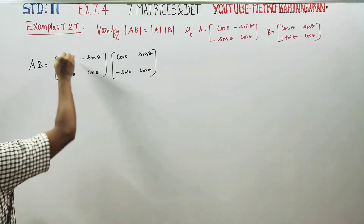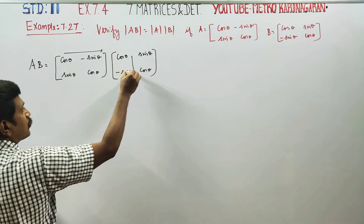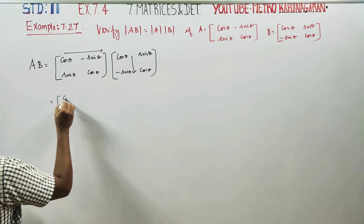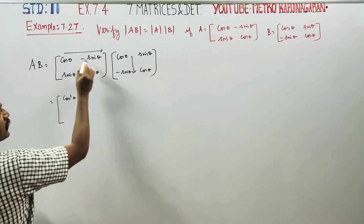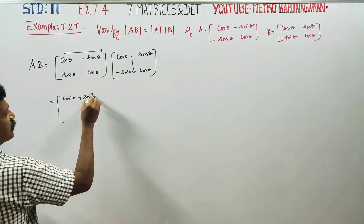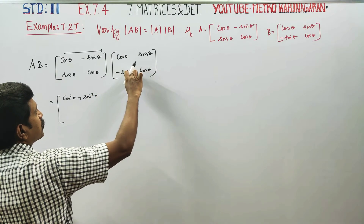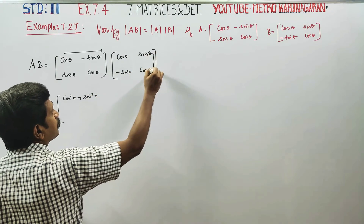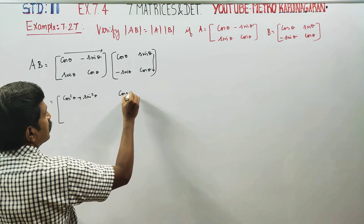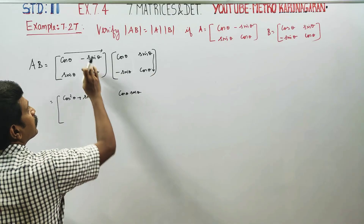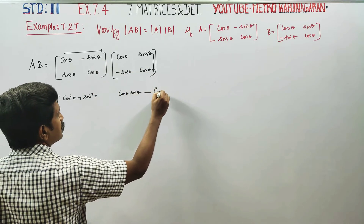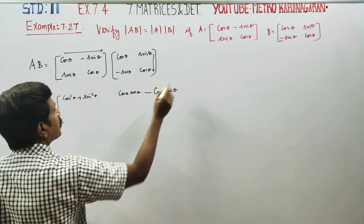Just multiply this row into column. Cos into cos is cos squared theta. Minus into minus is plus, sin into sin is sin squared theta. For the next column: cos into sin theta is cos theta sin theta. Plus into minus is minus, sin theta into cos theta is cos theta sin theta.